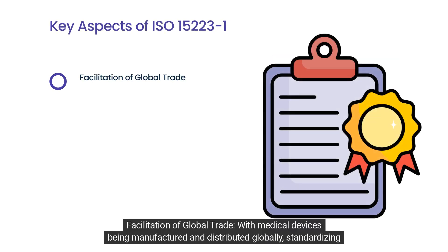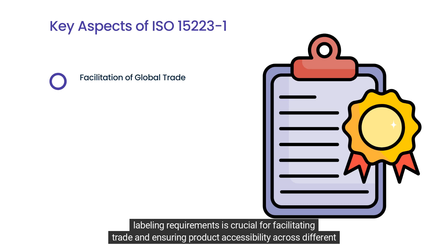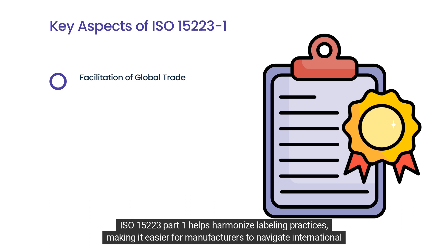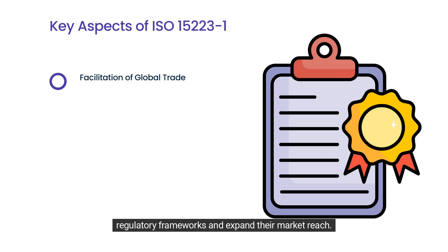Facilitation of Global Trade: with medical devices being manufactured and distributed globally, standardizing labelling requirements is crucial for facilitating trade and ensuring product accessibility across different markets. ISO 15223 Part 1 helps harmonize labelling practices, making it easier for manufacturers to navigate international regulatory frameworks and expand their market reach.